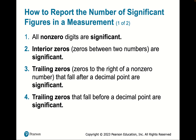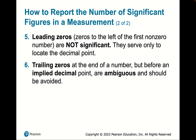Now for the rules of significant figures. Any non-zero digits are significant. Interior zeros are significant, and trailing zeros that fall after a decimal point are significant. But leading zeros before a decimal point are not significant — they only describe the decimal point. Trailing zeros without a decimal point are typically ambiguous and should be avoided; it's better to use scientific notation.